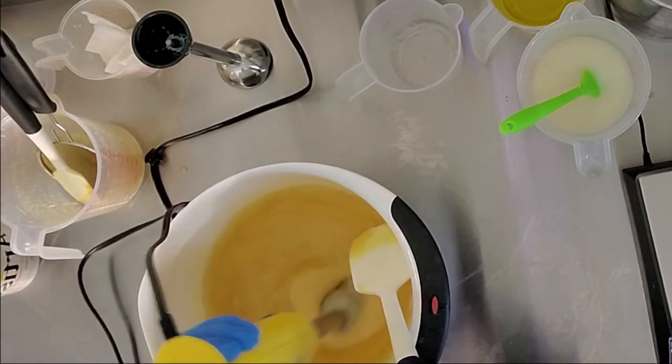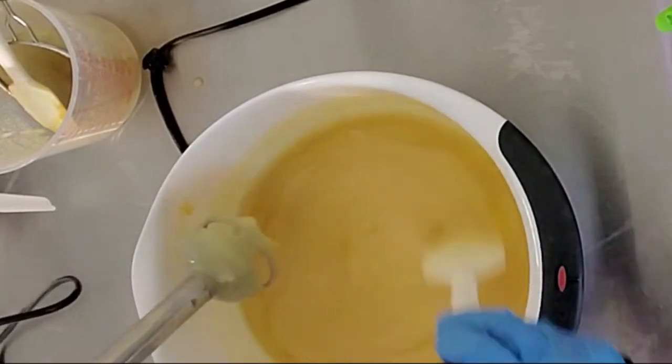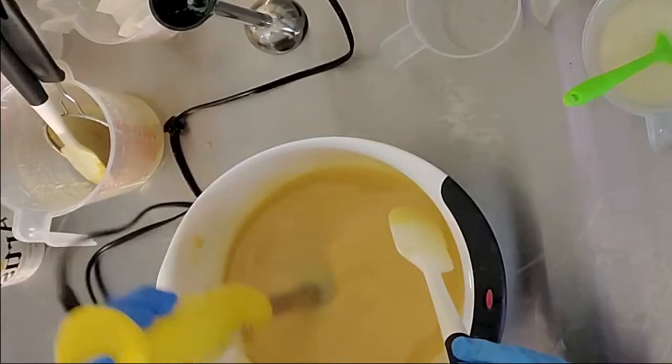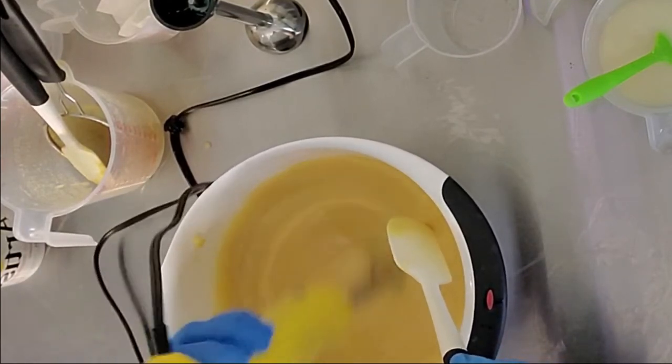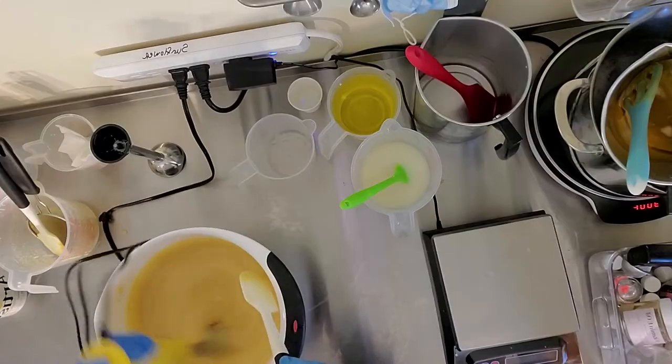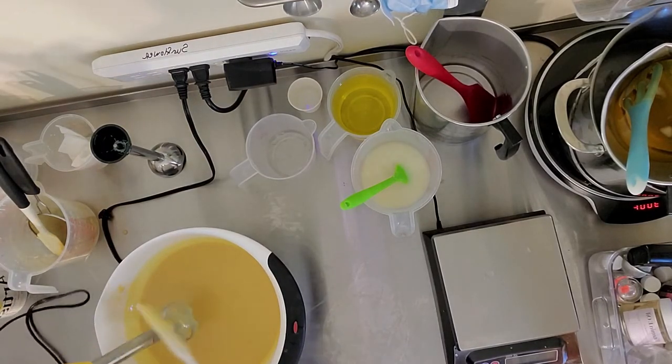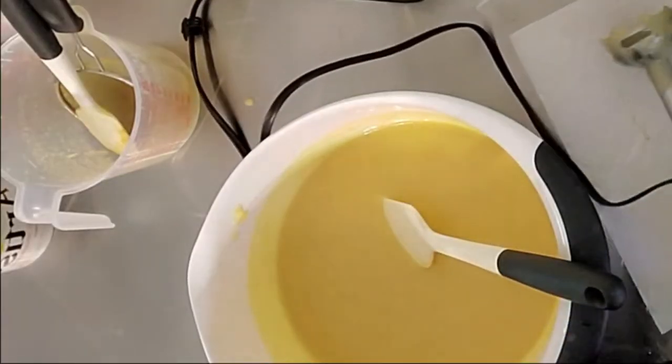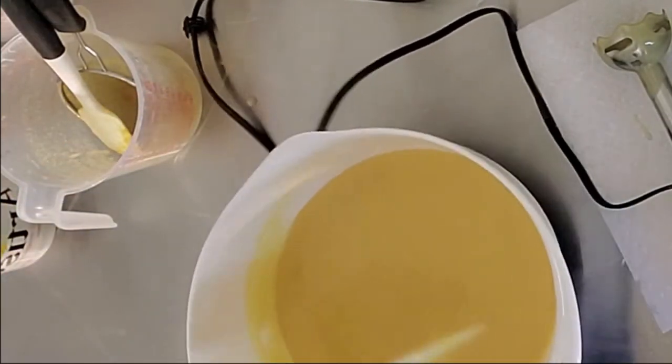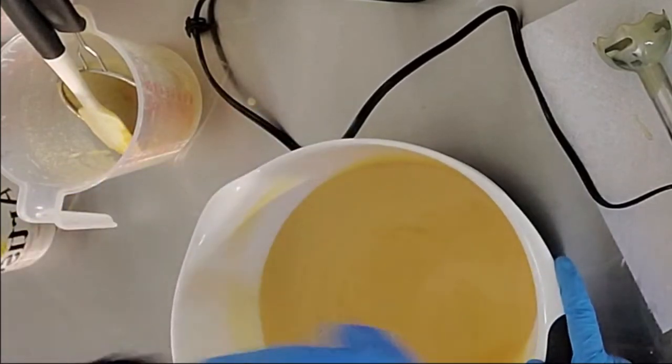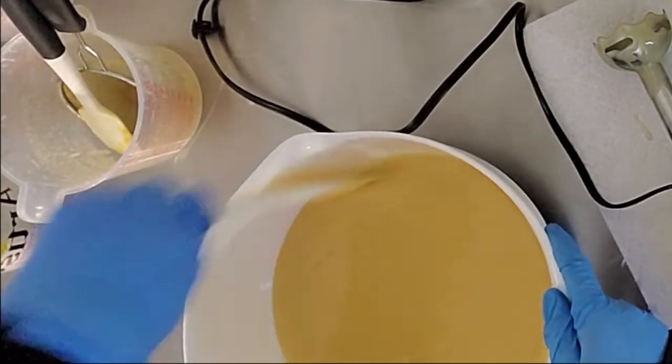Just keep mixing until you don't see any more separation. What you're looking for is some sort of a line when you pick up the spatula. You also want to make sure that you scrape the edges of the batter to make sure all of the oils and lye got mixed together. Anything that's left on the edge could influence your soap significantly if it's not mixed well.